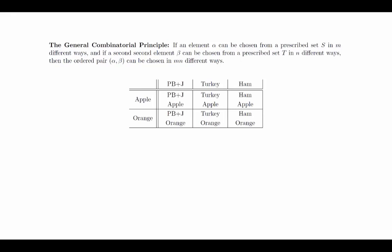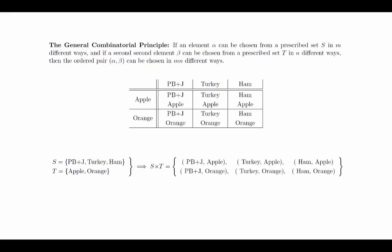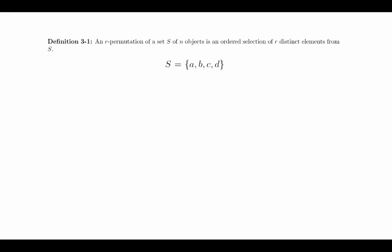The next combinatorial principle we will need is an R permutation. An R permutation of a set S of n objects is an ordered selection of R distinct elements from S. For example, let S be the set containing A, B, C, and D, and let's try to count all the possible three permutations — that is, an ordered collection containing three non-repeating symbols from the set S. For the first choice, we have four objects to choose from. For the second choice, we can't choose the first object again, so we have only three objects to choose from. Notice that even though the specific options may be different, the number of options to choose from will always be three. For the third choice, we only have two options remaining. By the general combinatorial principle, since there were four options, then three options, then two options, we multiply those numbers together to get 24 possible three permutations.